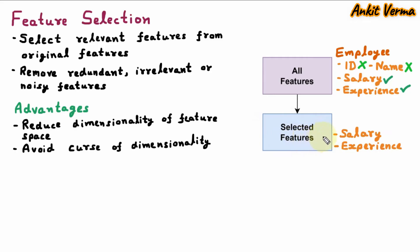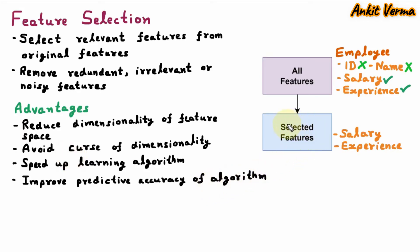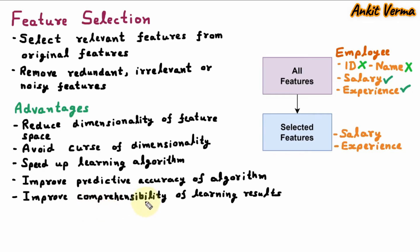It avoids the curse of dimensionality because we are having selected features and we are not going to increase multiple features unnecessarily. Next is it speeds up the learning algorithm, because the selected features are very few compared to all features, so the learning algorithm learns very fast. Next is it improves predictive accuracy, because the algorithm only works with selected and important features, making prediction more accurate. Next is it improves comprehensibility of learning results — meaning clarity — so the model is very clear on learning results.